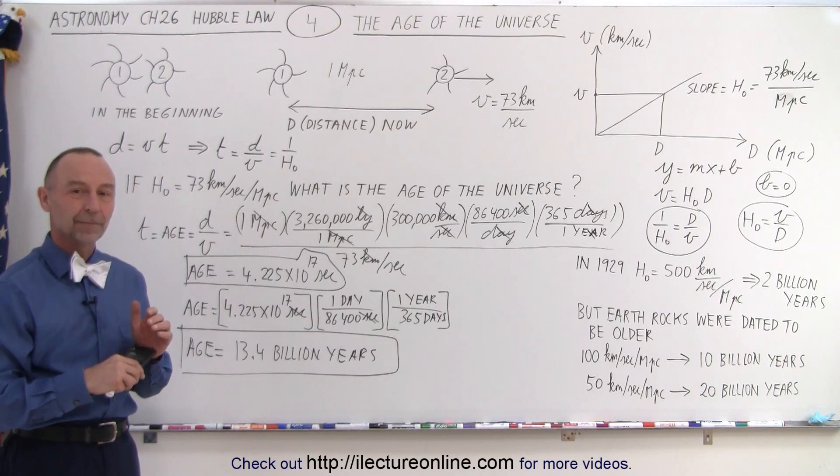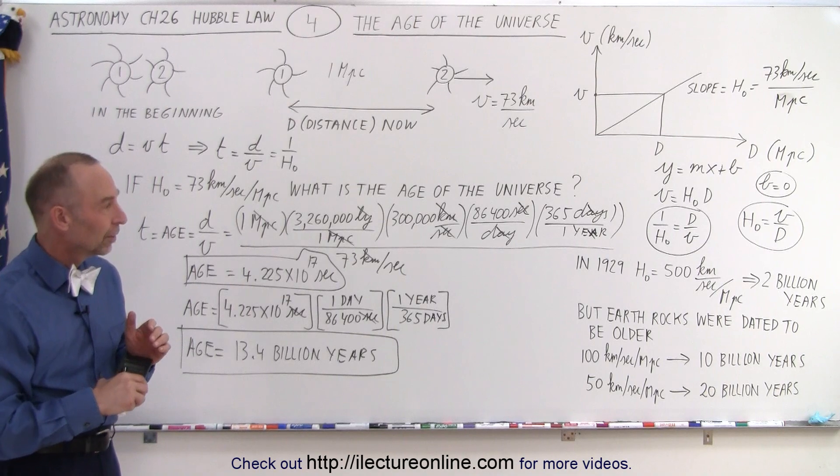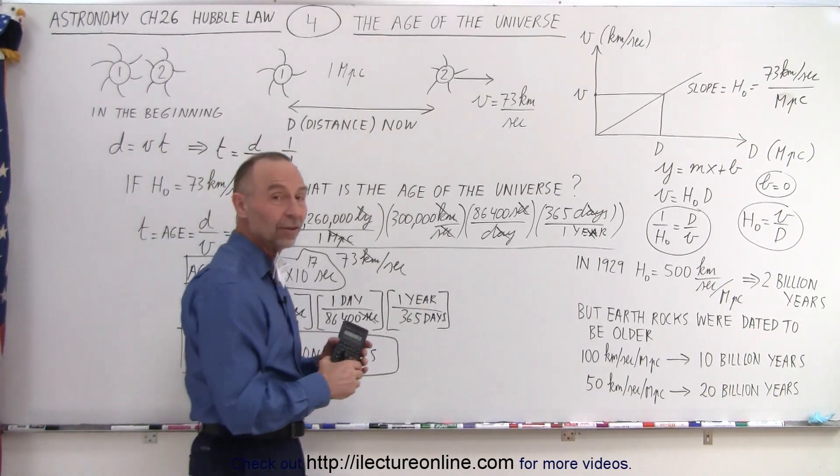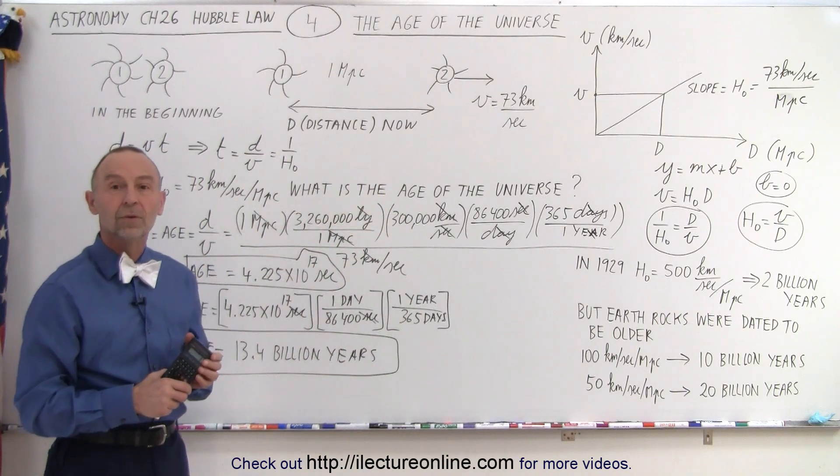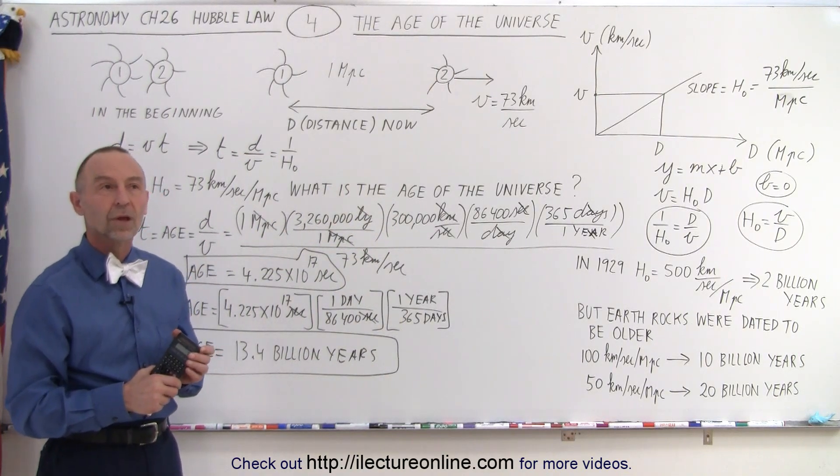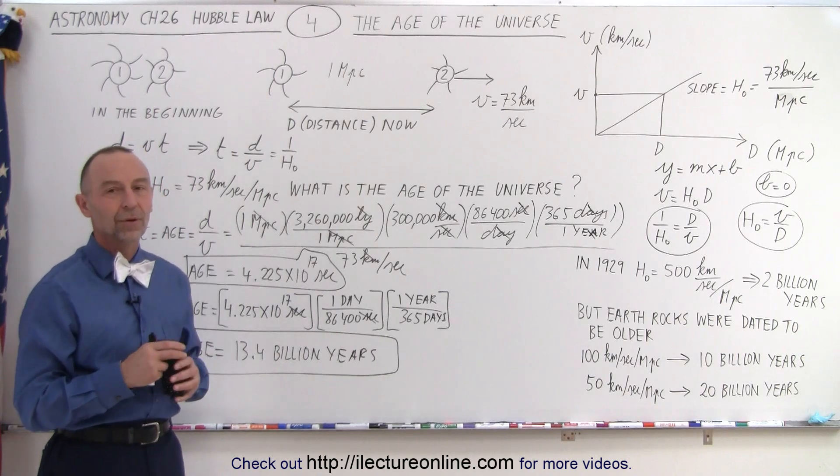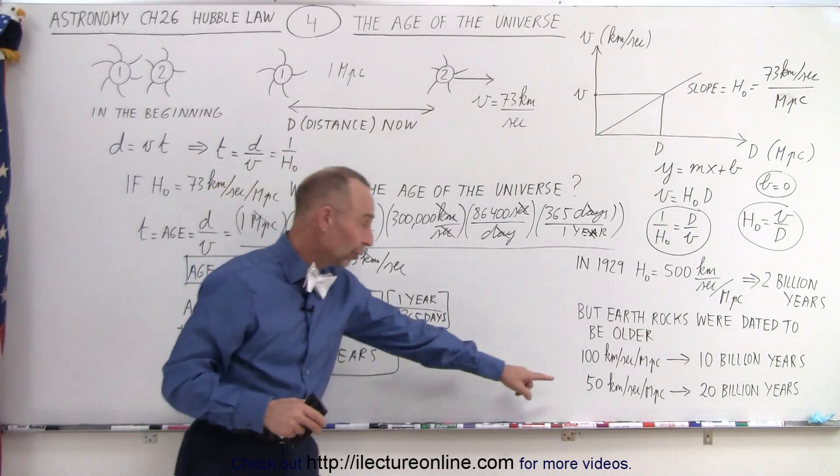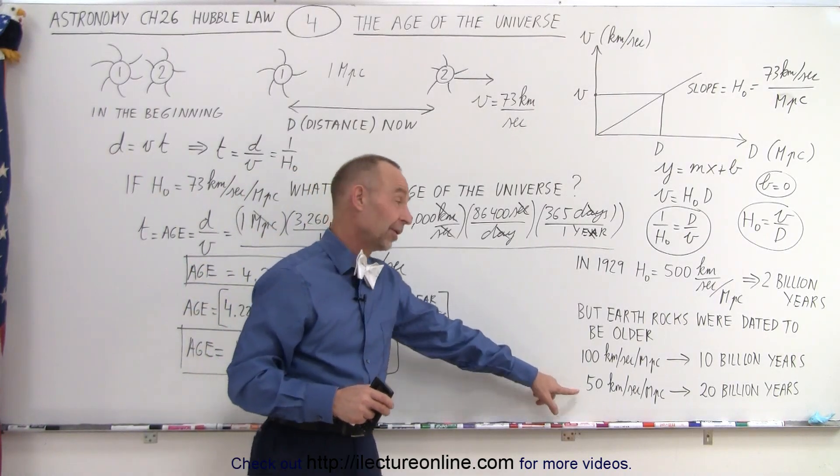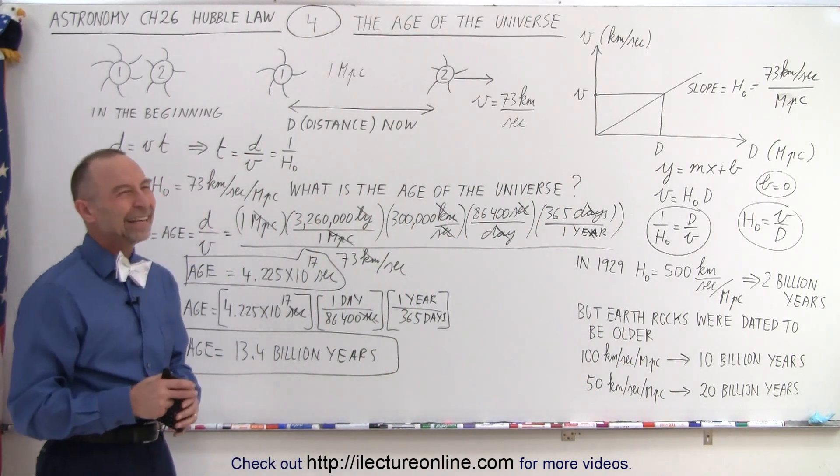Student: What is the maximum they ever predicted that they assumed the galaxy was? Instructor: The Hubble constant? Student: I remember that the galaxy was a lot older than 15. Instructor: It wasn't so much the galaxies. Student: How old was the universe? Instructor: Yeah, well, they had a time that the number got to be very close to 50 kilometers per second per megaparsec, which made the universe to be about 20 billion years old.